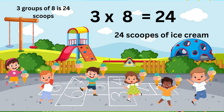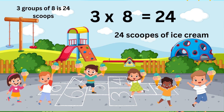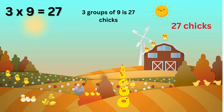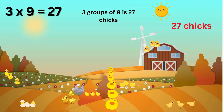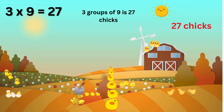3 times 8 is 24, they are 24 scoops of ice cream. 3 times 9 is 27, they are 27 chicks.